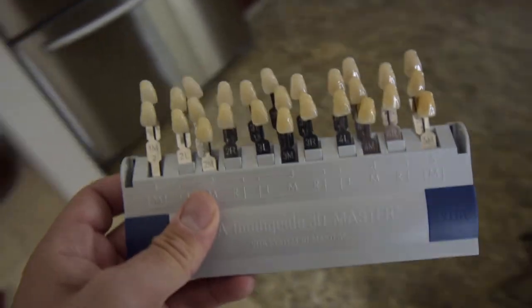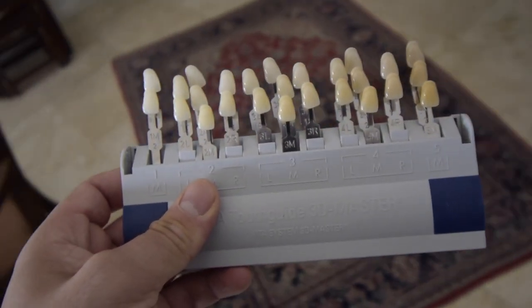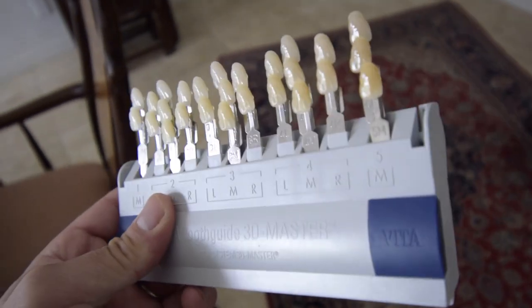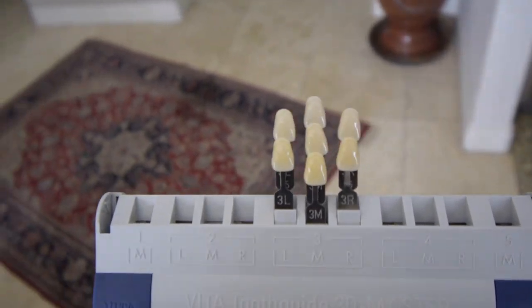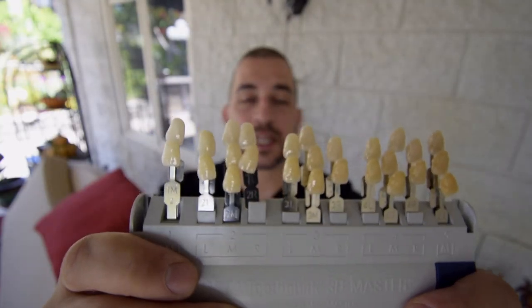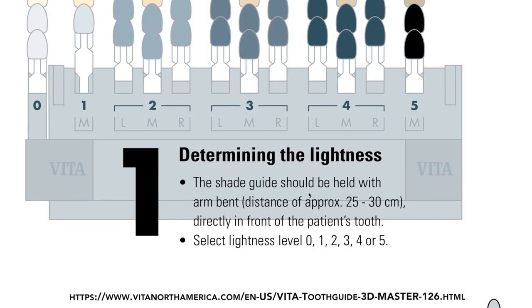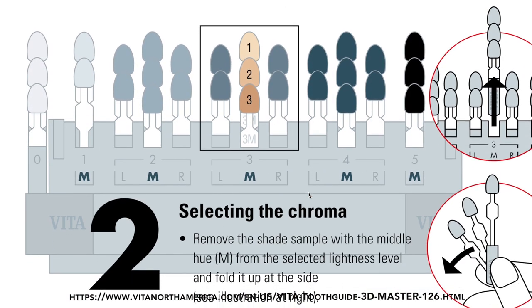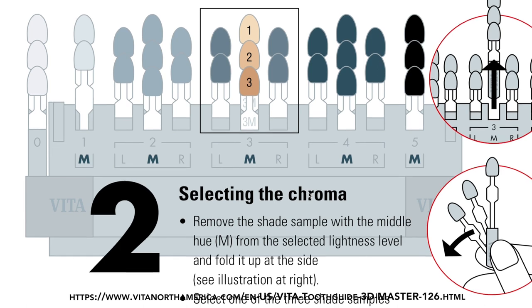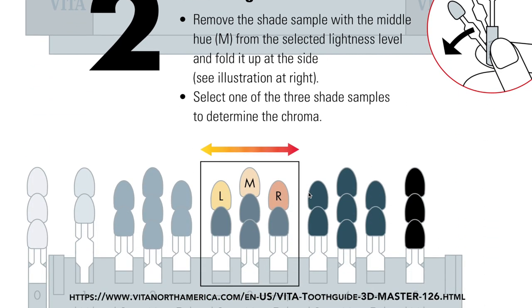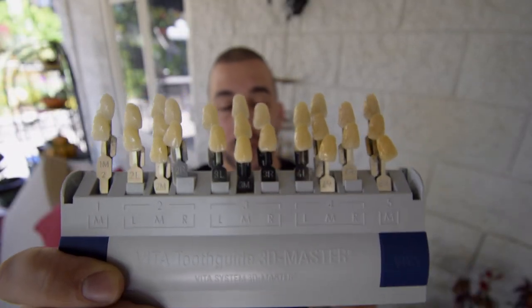There are a few newer systems that have organized the shade tabs in a more predictable way, and one of them is the 3D Shade Master. You can immediately tell the difference between the two — much more variation in shade tabs, organized in a variety of groups. For this system, you first select the group that has the closest value to the patient's tooth, then scroll down through the rows to select the closest matching chroma, then move either left or right to pick a shade with more reddish hue or a more yellow hue.